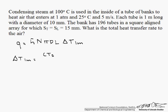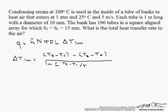Delta T log mean is (T_s minus T_i), where 100 degrees is the temperature of the surface and T_i is 25 degrees C, minus (T_s minus T_o), divided by the natural log of (T_s minus T_i) divided by (T_s minus T_o). We have T_s and T_i, but what we don't have is T_o.